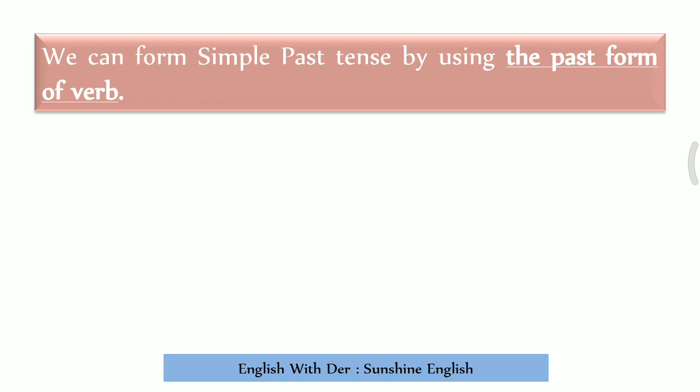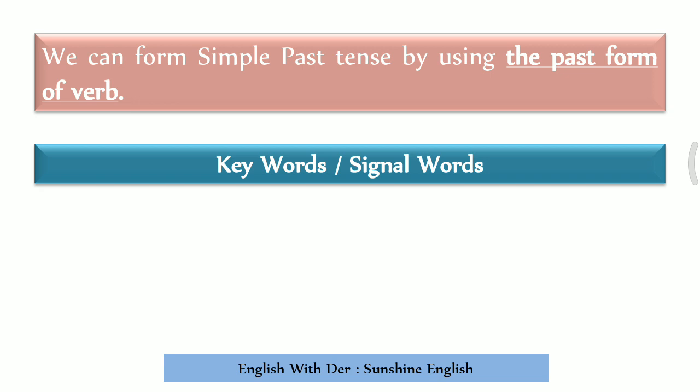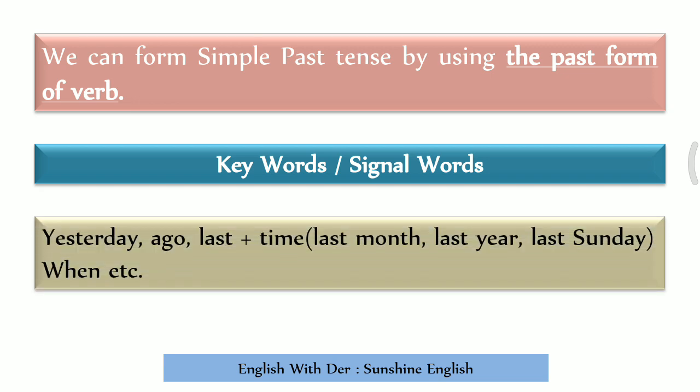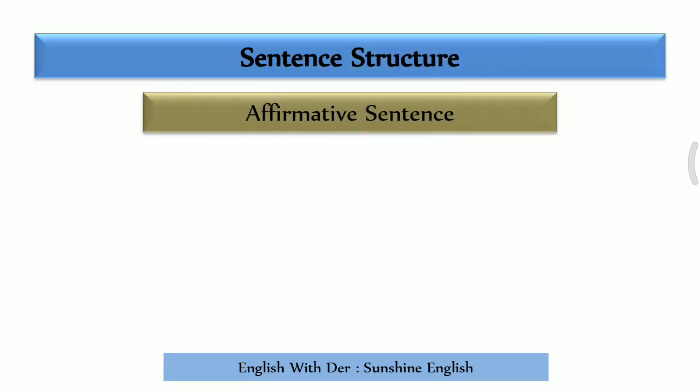We look back to the past form of the verb — the kriya (verb). You turn to the past form of the verb, which is V2. After the subject, the past form of the verb comes. For any verb in simple past tense, we always use V2 — the past form of the verb.